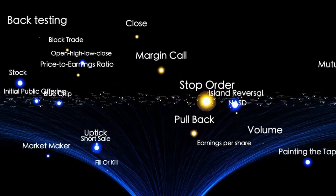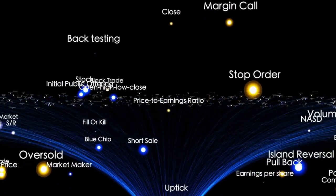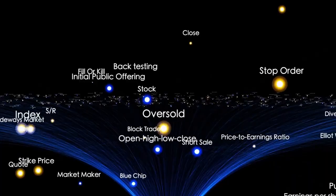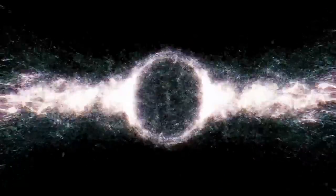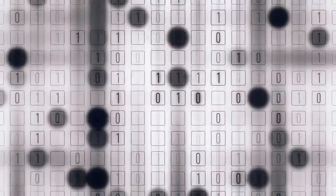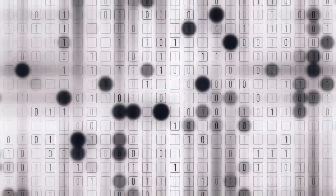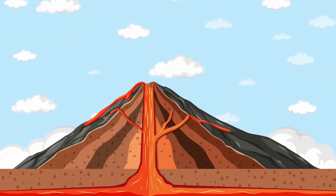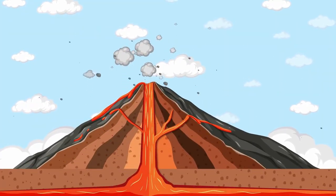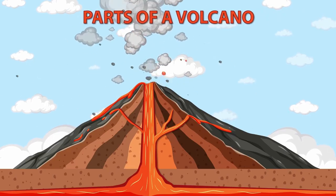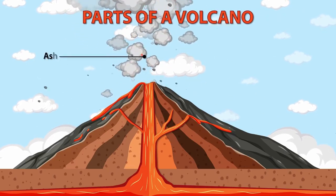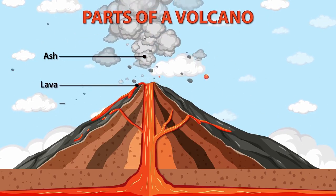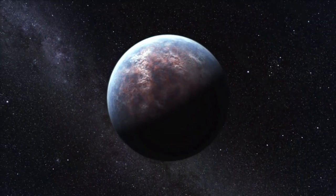This one discovery has sent shockwaves through cosmology. It fundamentally challenges our timeline of how the universe evolved. The fact that this bubble of emptiness, or really transparency, exists so early creates what scientists are calling a photon budget crisis. Basically, to ionize a bubble that big, you need a certain amount of high-energy photons, a budget of light. The way we thought early galaxies formed simply doesn't produce enough photons that quickly.